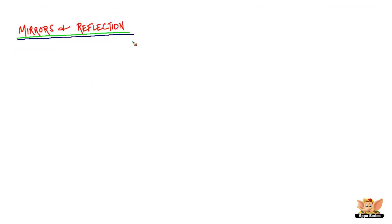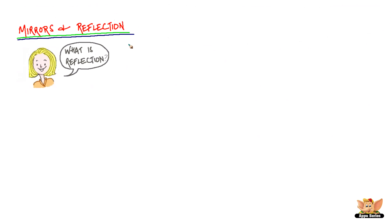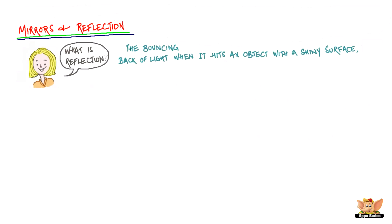Mirrors and Reflections. What is reflection? The bouncing back of light when it hits an object with a shiny surface, like a mirror, is called reflection.